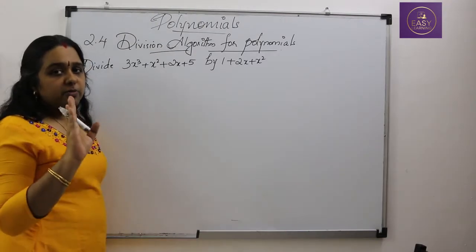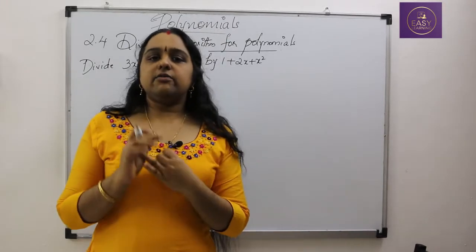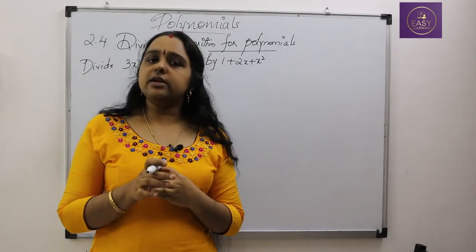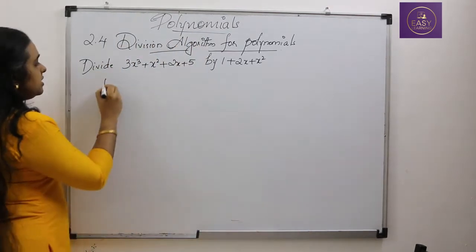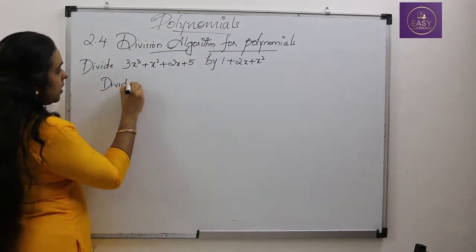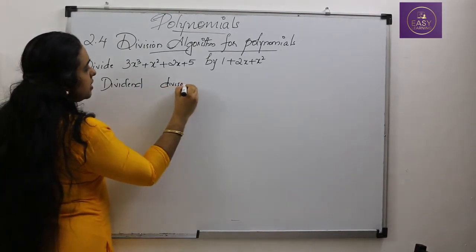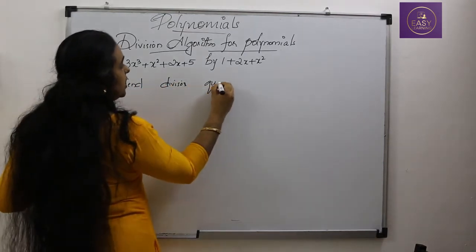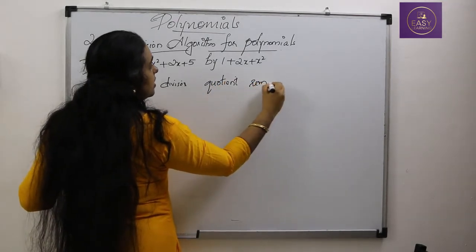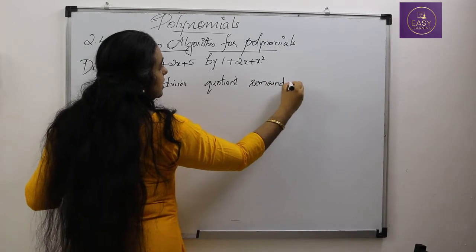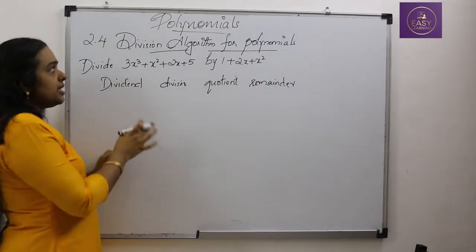Before moving on to the problem, you have to remember four names: dividend, divisor, quotient, and remainder. These are the four terms you have to remember before doing the division process.